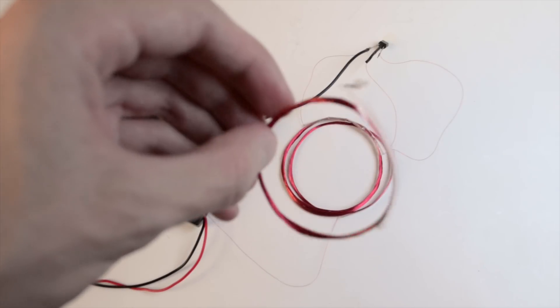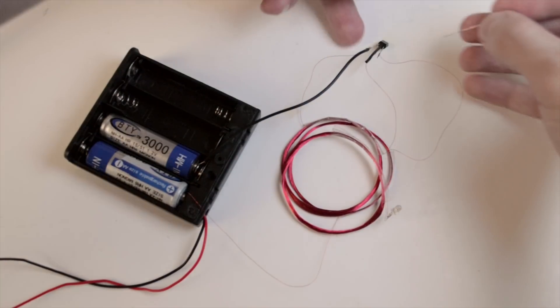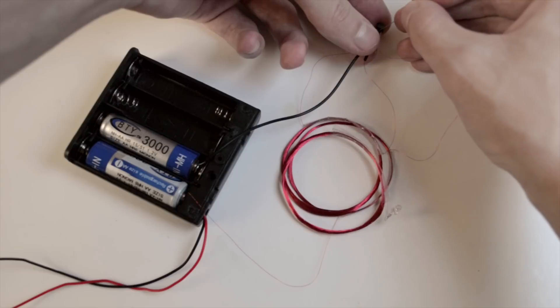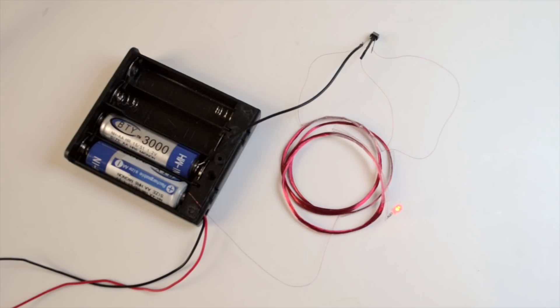Place the indicator coil nearby. Last step is touch transistor's base with something metal to start generator. Now you understand why the heat shrink tube is there. And voila! LED lights, device works.